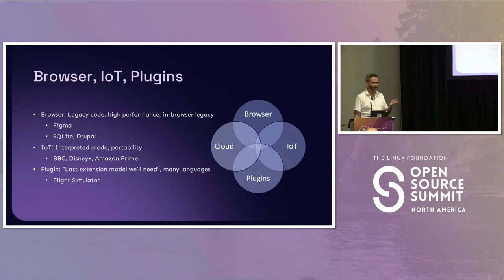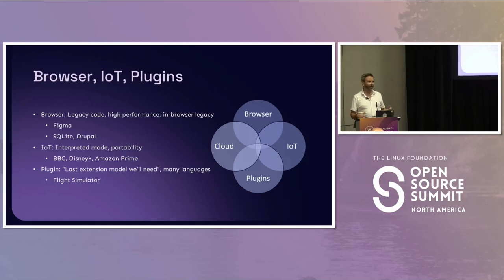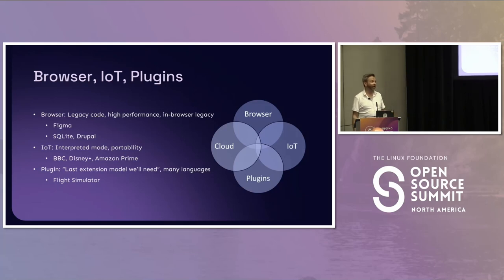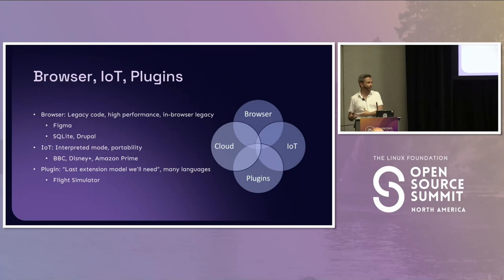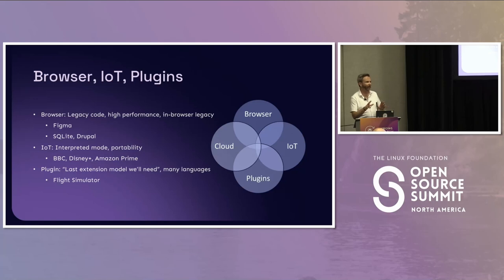We also get high performance. Figma is a great example — it does vector-based drawing in the browser. How many of you have used Figma? It's remarkably fast for the graphical operations it does, and part of the reason is that a chunk of the codebase is written in C++ and compiled to WebAssembly, so they can do very fast numerical computation and then use JavaScript to interface with that.